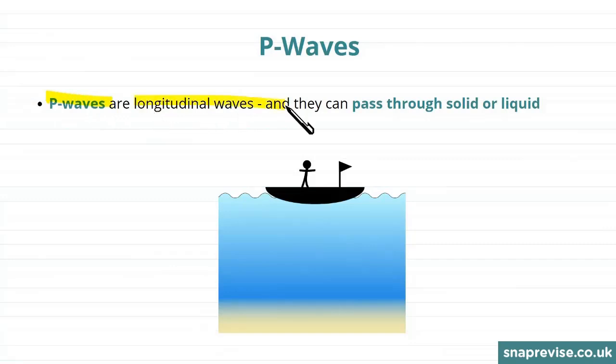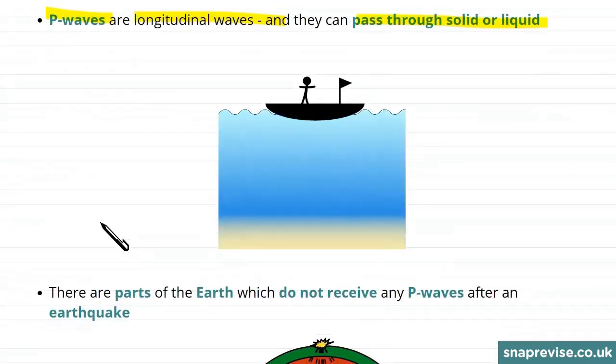P-waves are longitudinal waves and they can pass through solid or liquid. So for example, the P-wave could pass through something liquid like the sea and it could pass through the solid underneath the sea as well.